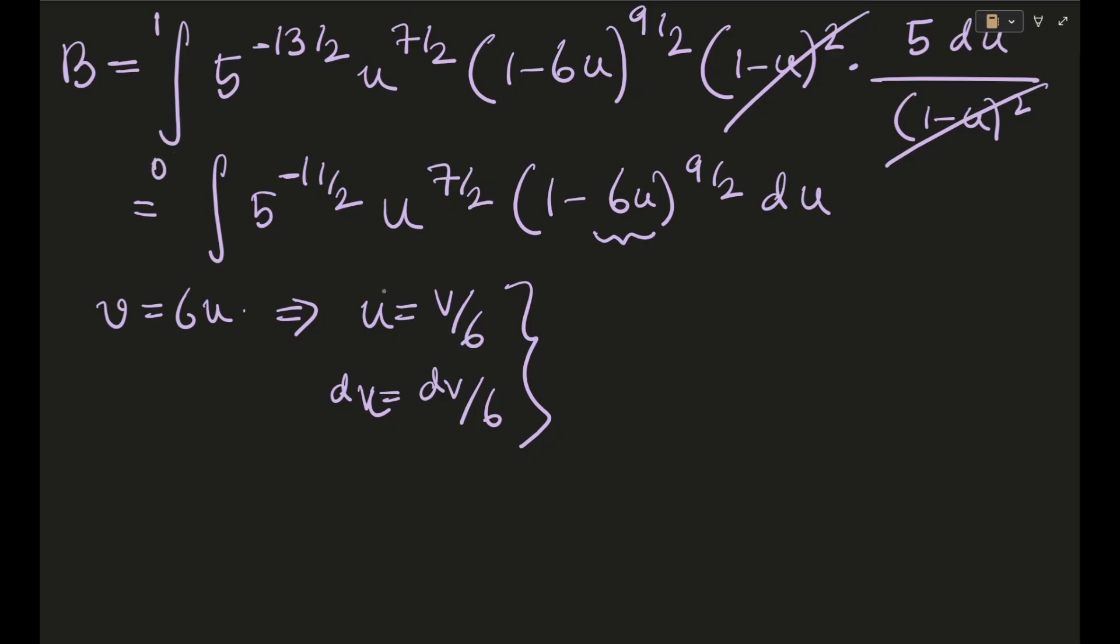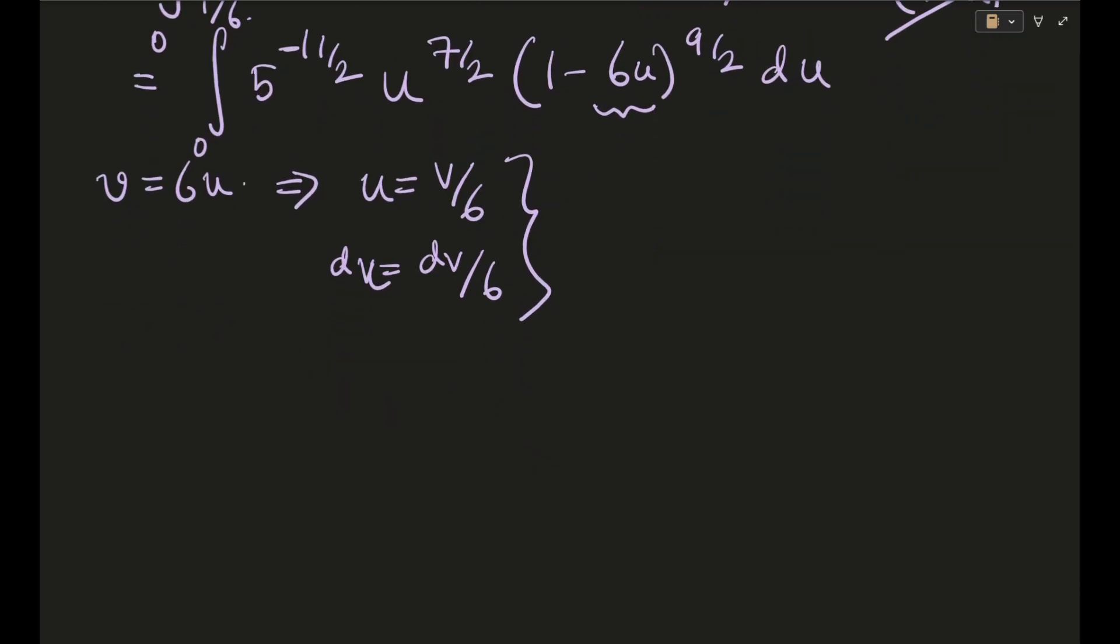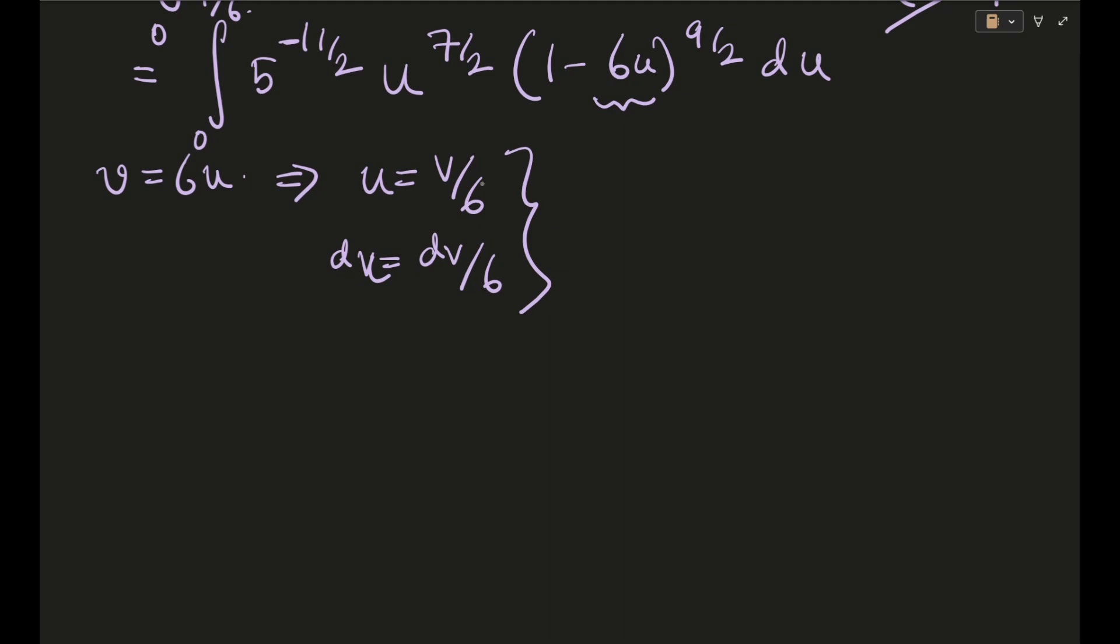Now basically what will happen is one thing that I forgot was to specify the limits. Now limits in the beginning was 0 to 1. Okay but now I guess they will become, you can calculate, they will become 0 and 1/6. Okay so basically reverting that this thing will actually revert back to the same limit once again which is 0 to 1 itself.